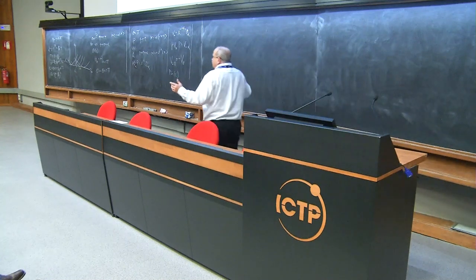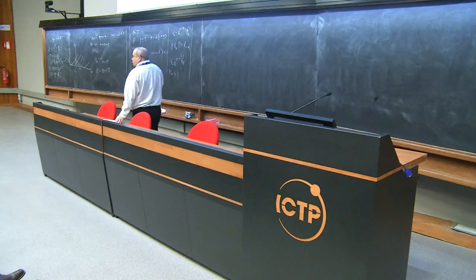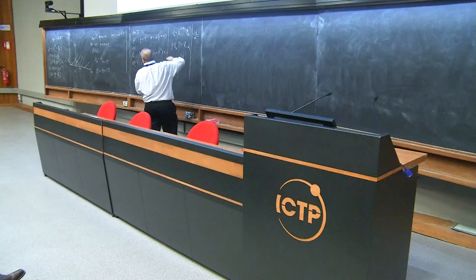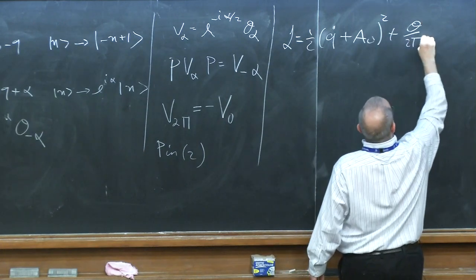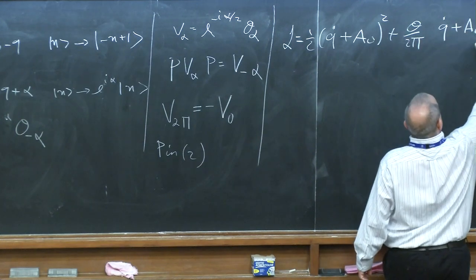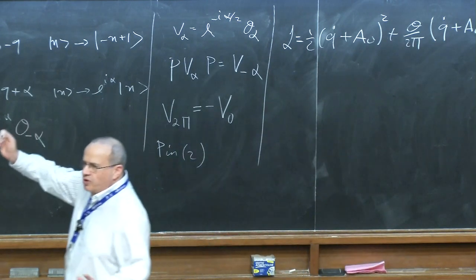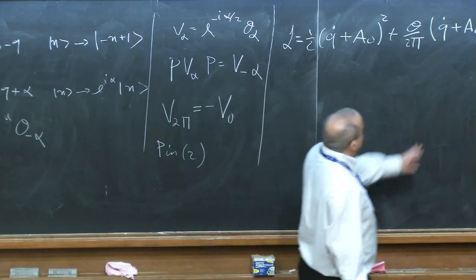Whenever we have a global symmetry, we would like to couple the system to a classical background field. This is not a gauge field we integrate over in the functional integral — it's just a classical background. For example, for a system with U(1) symmetry like electrons, you can put it in a background electric or magnetic field. We couple it to a background gauge field A.